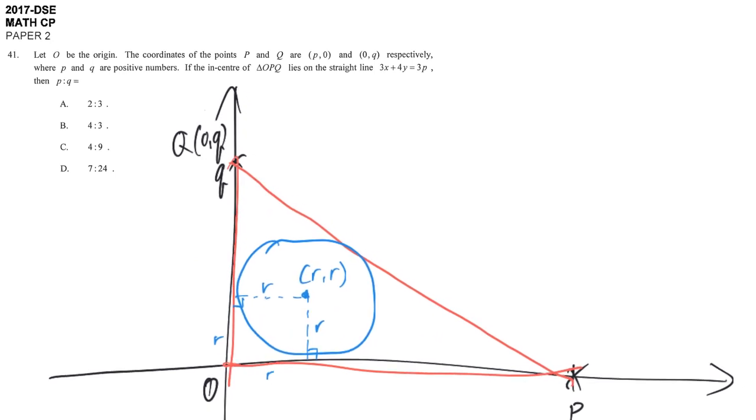then the coordinate of the center is (R, R). Since (R, R) lies on 3x + 4y = 3p, we can find the connection between the radius and P.